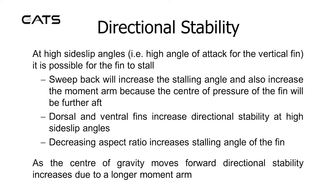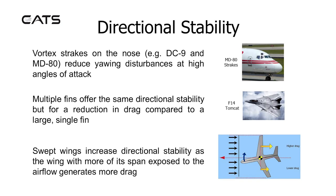Sweepback will increase the stalling angle and also increase the moment arm, because the centre of pressure of the fin will be further aft. Dorsal and ventral fins increase directional stability at high sideslip angles. Decreasing aspect ratio increases the stalling angle of the fin. As the centre of gravity moves forward, directional stability increases due to a longer moment arm. Vortex strakes on the nose — for example on the DC-9 and MD-80 — reduce yawing disturbances at high angles of attack. The larger the fin, the greater the directional stability of an aircraft.